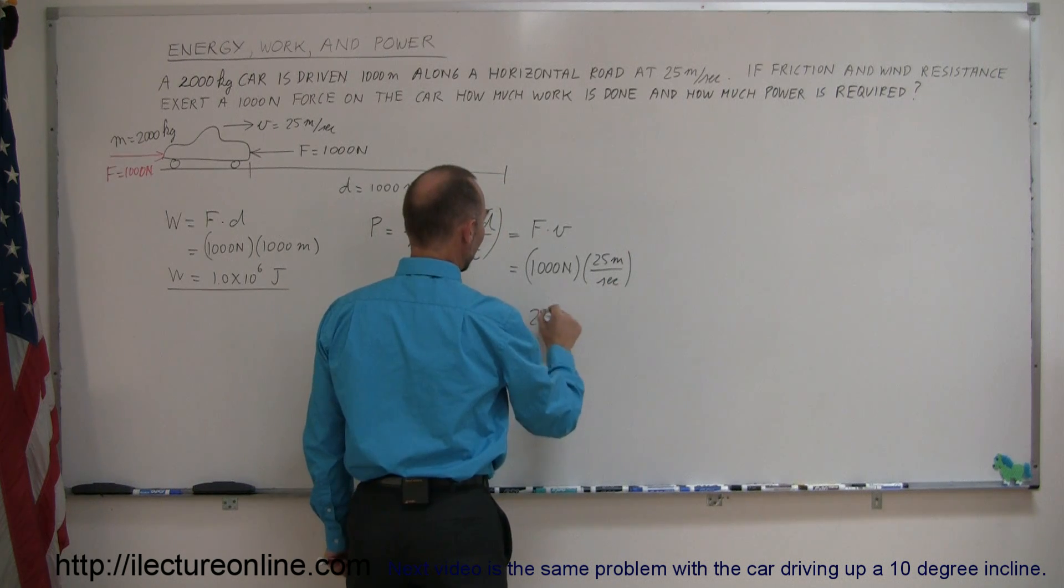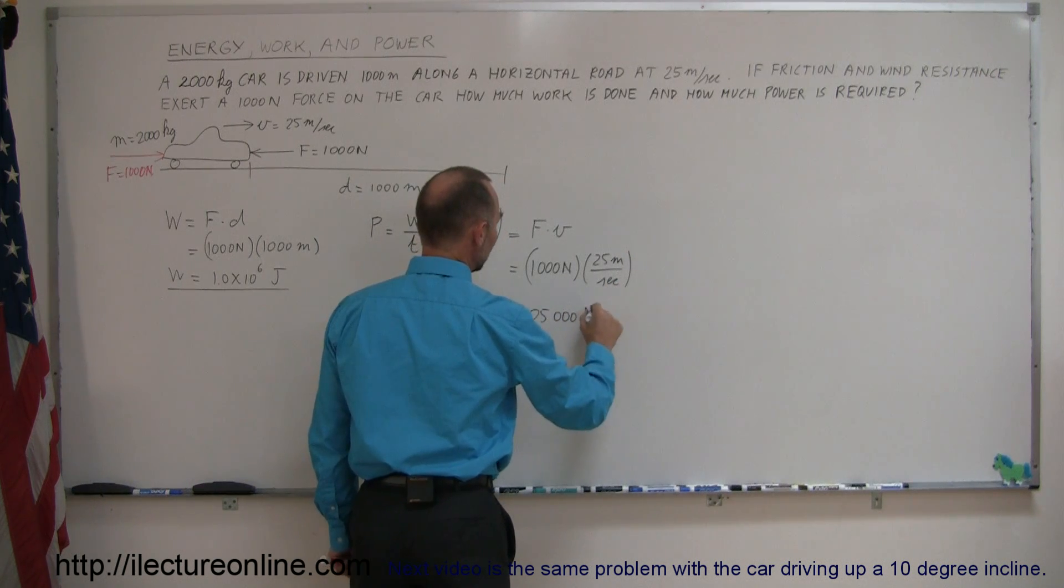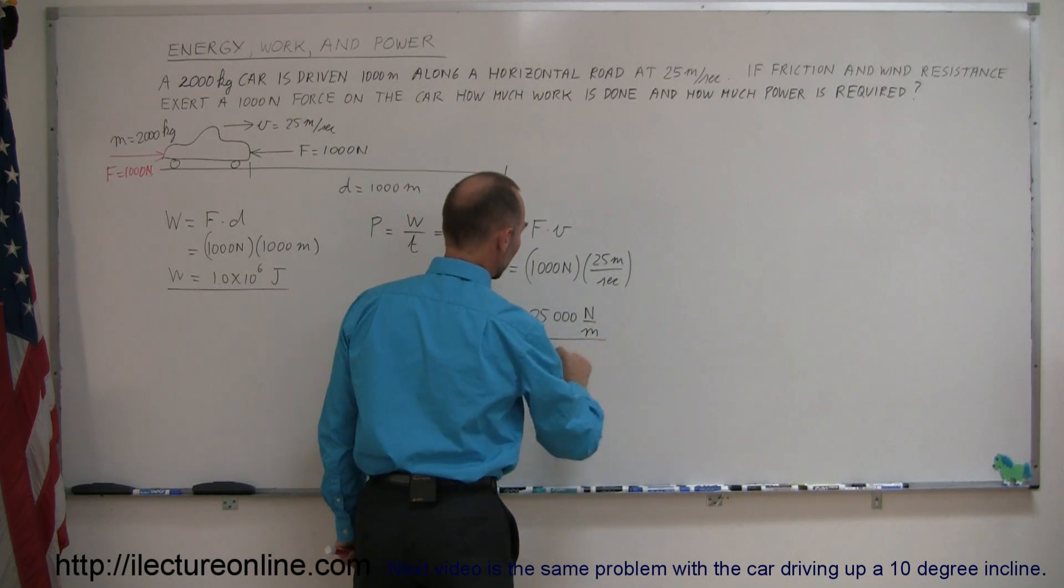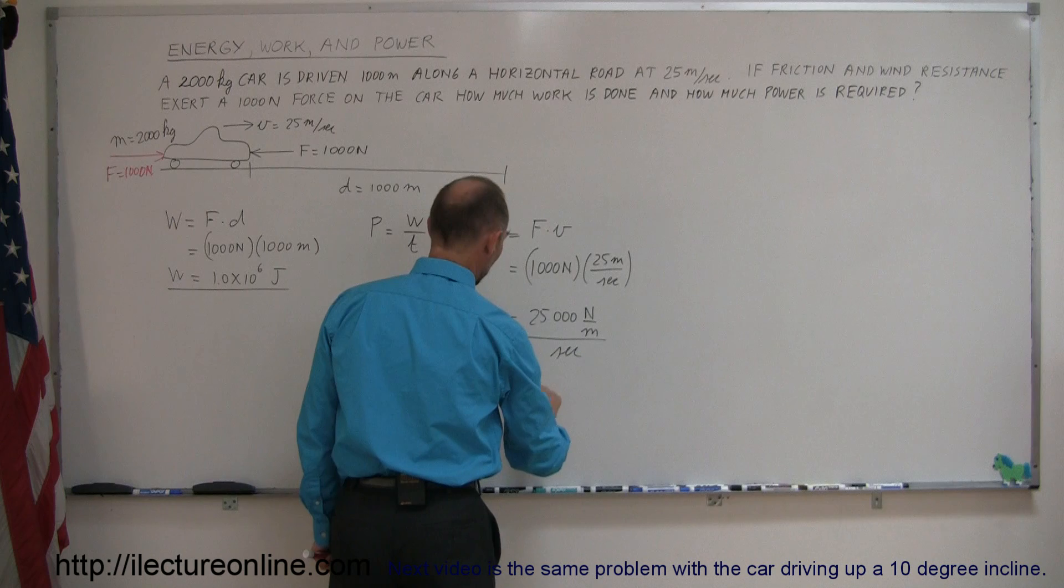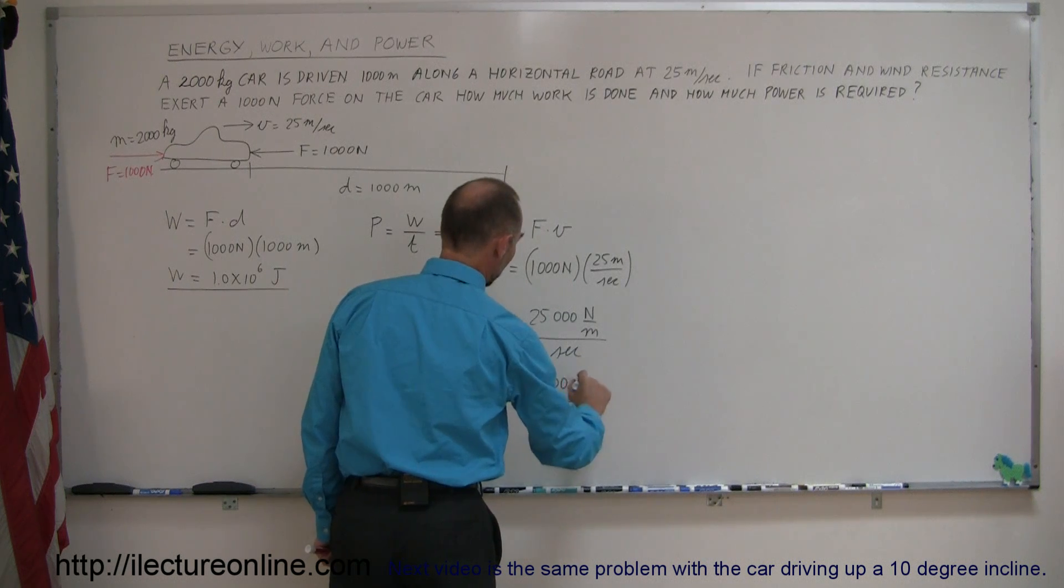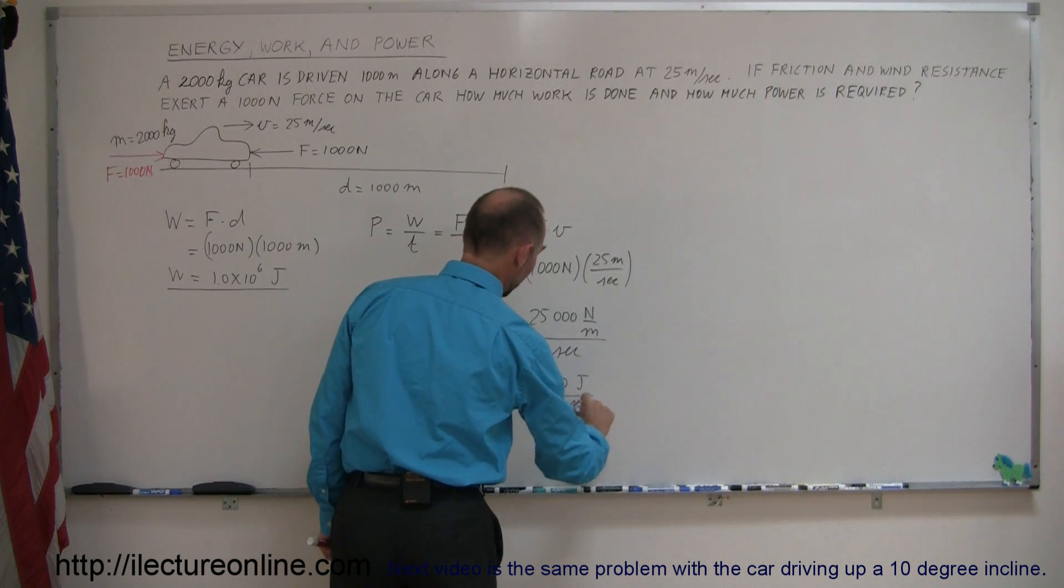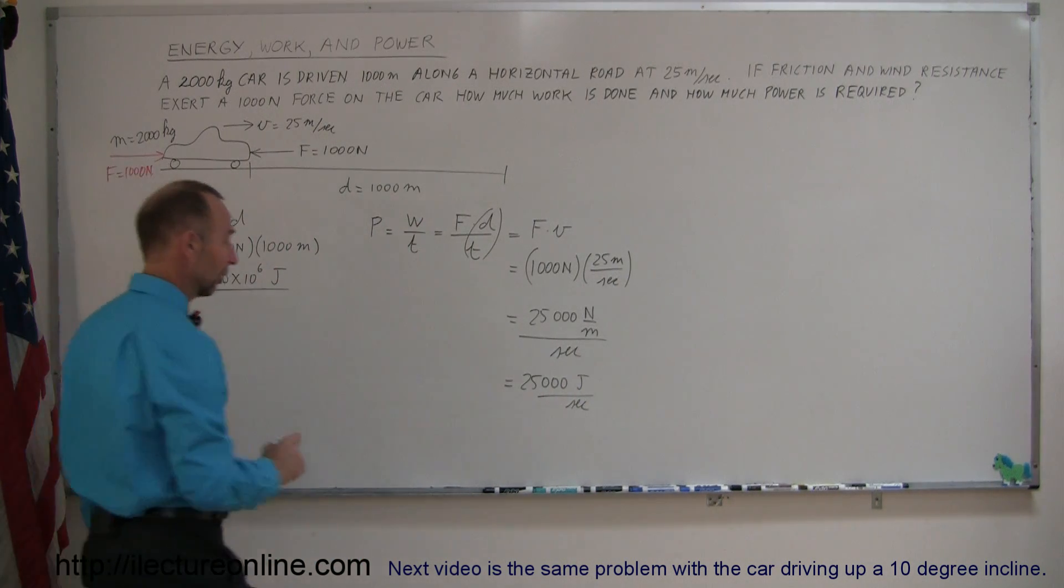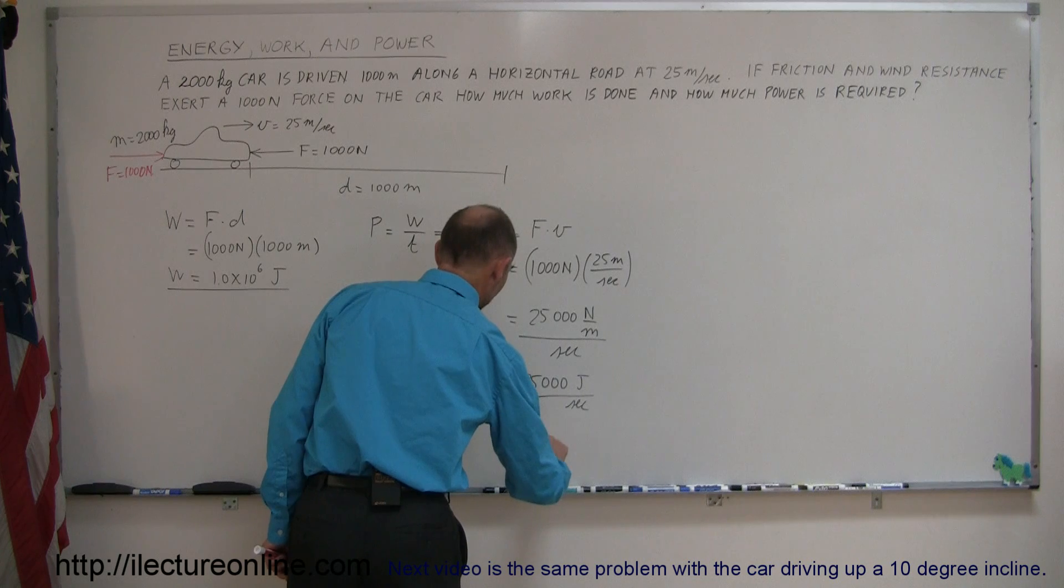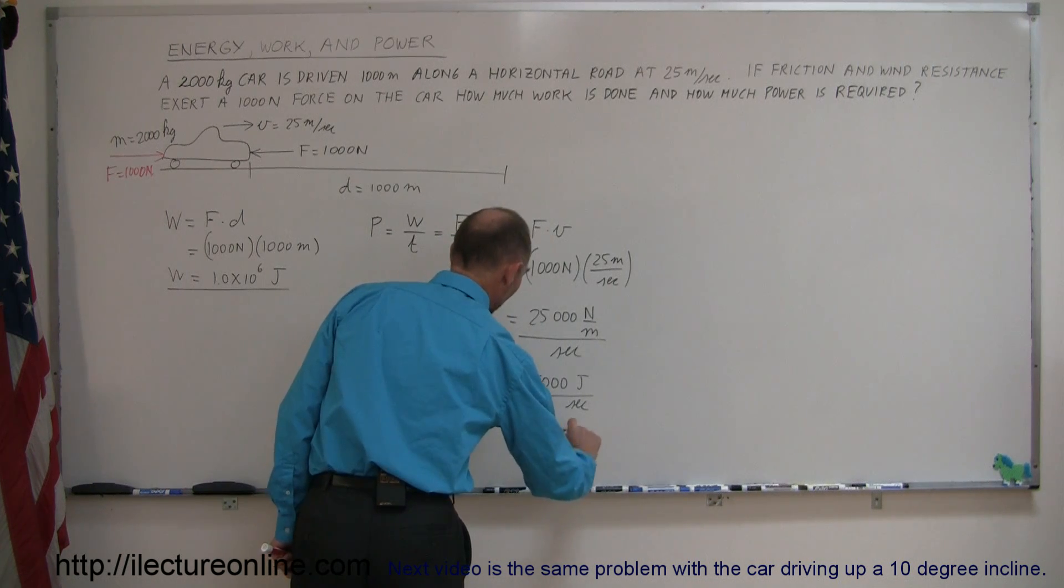And so, this is equal to 25,000 newton meters per second. Now, newton meters is joules, so this is equal to 25,000 joules per second. And we have a unit for that. Joules per second is actually equal to watts. So, this is equal to 25,000 watts.